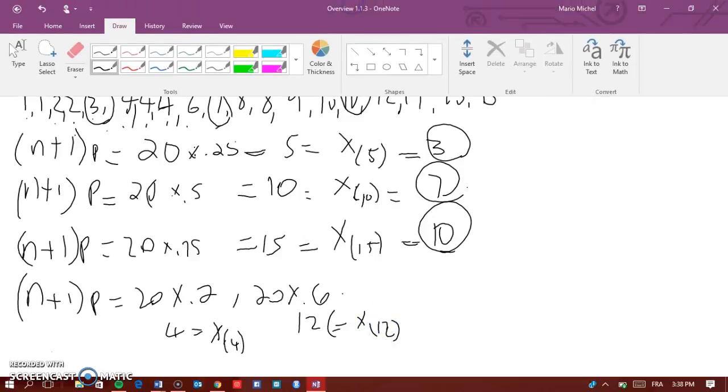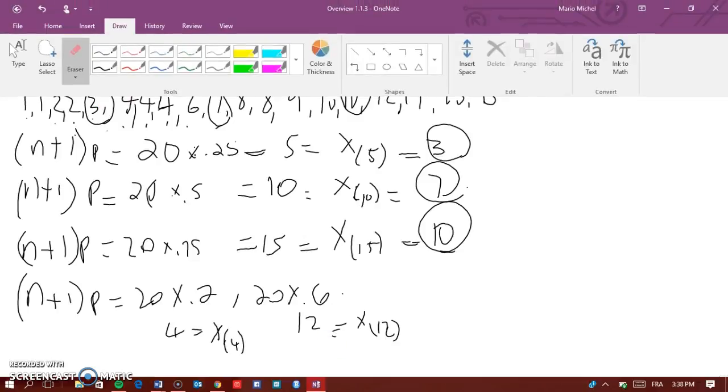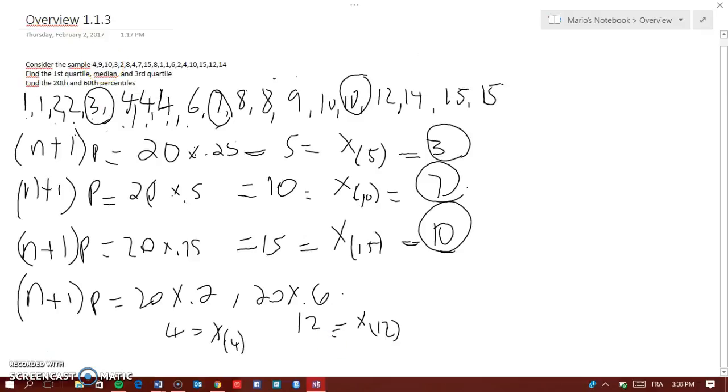So, it's basically saying, what is the fourth number, and what is the 12th number of the sample. So, that would equal to, 1, 2, 3, 4 would equal to 2, and 10, 11, 12 would equal to 8.